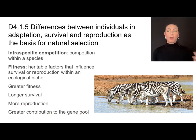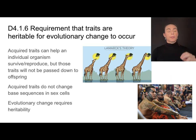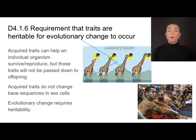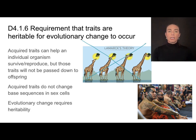One reason heritability is so central to the definition of fitness is because acquired traits, although they can help an individual survive and reproduce, won't be passed down to offspring. That was the premise of Lamarckism, which has been falsified by much evidence. Acquired traits don't change the DNA-based sequences in the gametes — the sex cells — so they won't be passed along to the next generation.